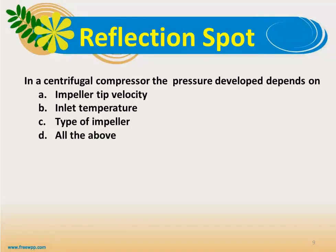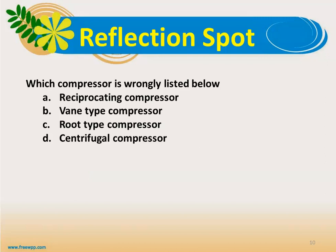For review questions: In the centrifugal compressor, the pressure developed depends on impeller tip velocity, inlet temperature, type of impeller — all of the above parameters influence the pressure rise. Which compressor is wrongly listed among the positive displacement machines? The answer is the centrifugal compressor, because reciprocating compressor, vane type, and root type are all positive displacement machines, while the centrifugal compressor is a non-positive type machine.